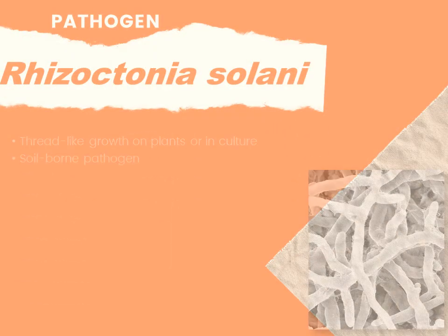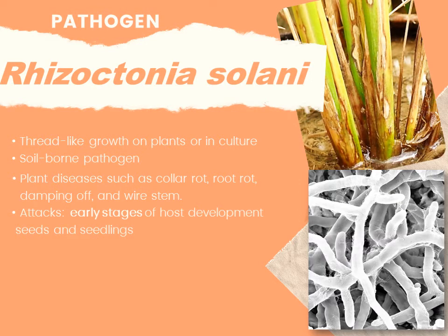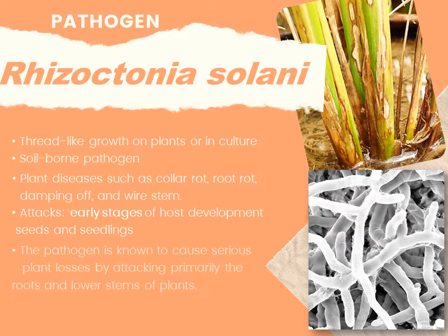Rhizoctonia solani is known to cause various plant diseases such as collar rot, root rot, damping off, and wire stem. It attacks its host when they are in the early stage of development, such as seeds and seedlings typically found in soil. The pathogen is known to cause serious plant losses by attacking primarily the roots and lower stem of the plant, and it frequently exists as thread-like growth and is considered a soil-borne pathogen.